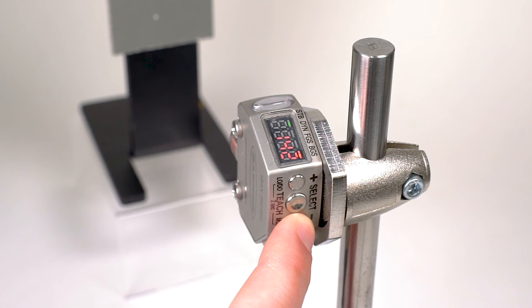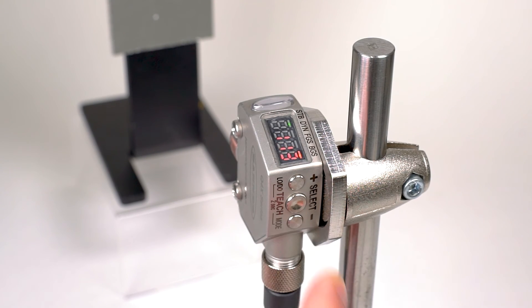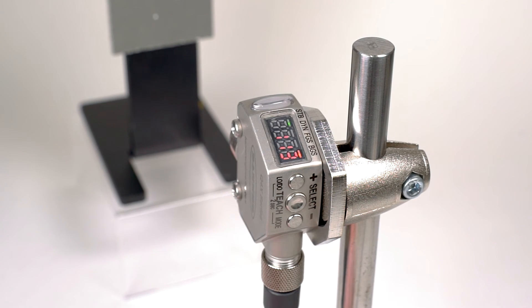You can modify the switch point location by pressing the plus and minus buttons. Once the desired value is selected, leave the sensor alone for two seconds and the screen will flash to confirm the new switch point and return to run mode.